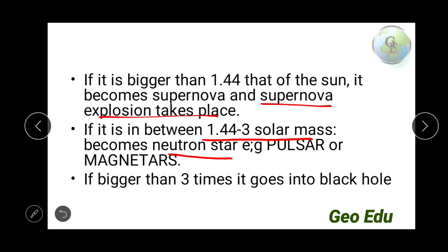Pulsars are pulsating stars. Both pulsars and magnetars have magnetic fields around them. But in the case of a pulsar, it rotates very fast, so we can observe the light in a pulsating, up-and-down manner. In magnetars, it rotates slowly, so we cannot see that pulsating manner in magnetars. This is the difference between the two.